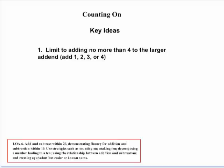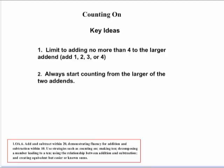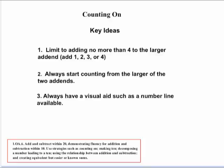The first strategy is counting on. Some key ideas: first, limit addition contexts to adding no more than four to the larger addend. You always want to start counting from the larger of the two addends. It's also a good idea to have some type of visual aid, manipulatives, and a number line if available.